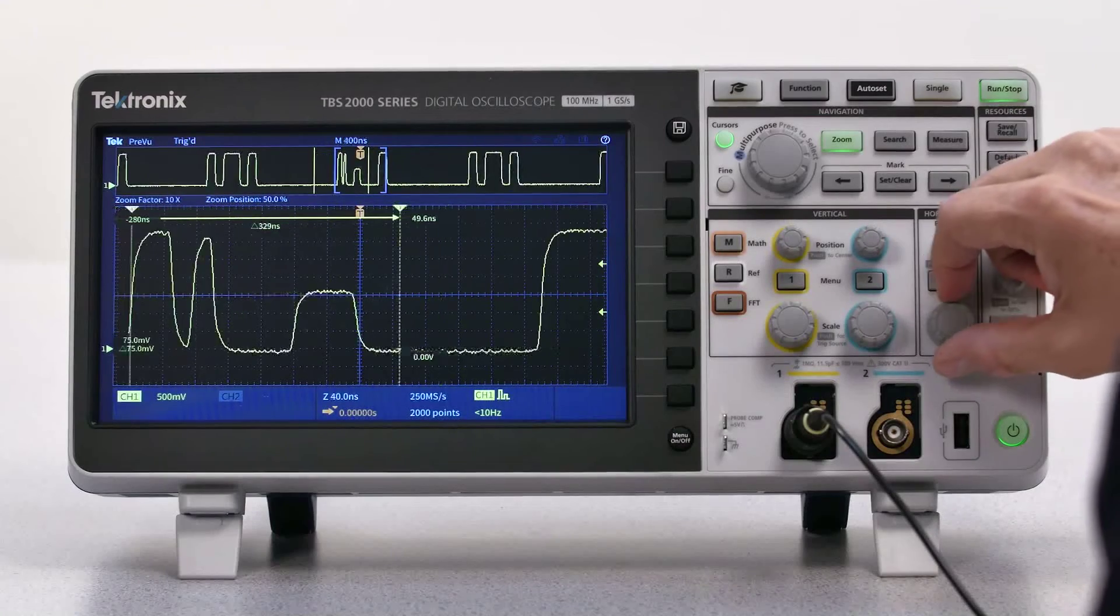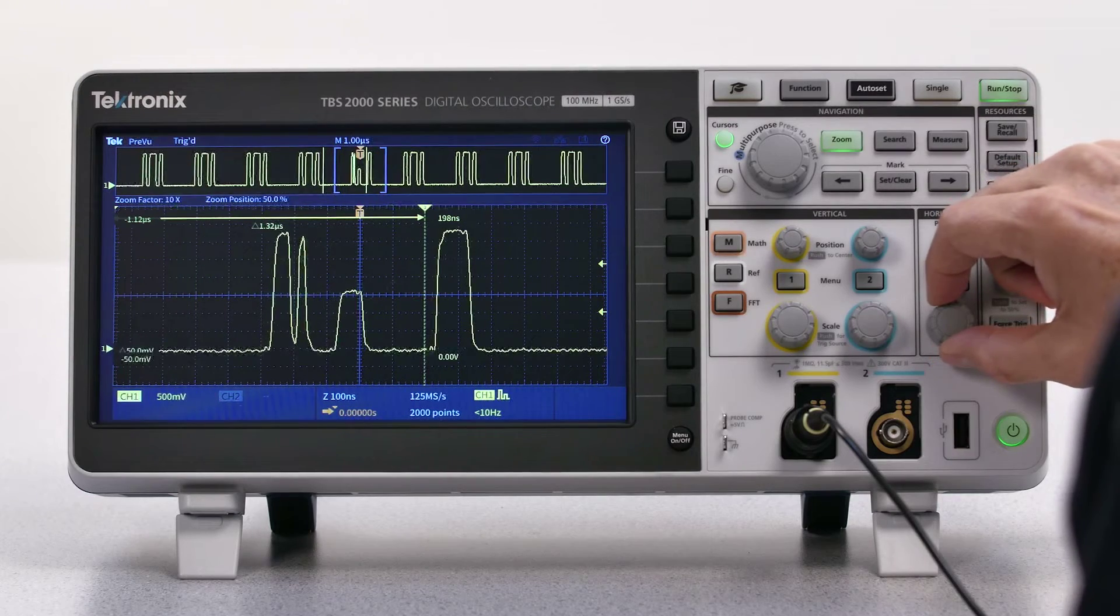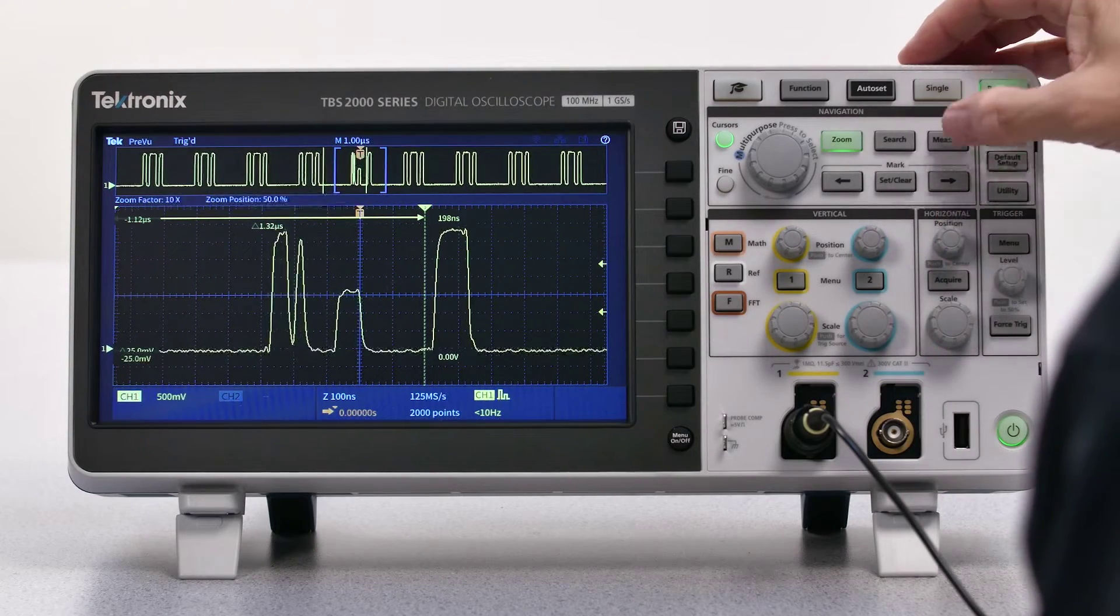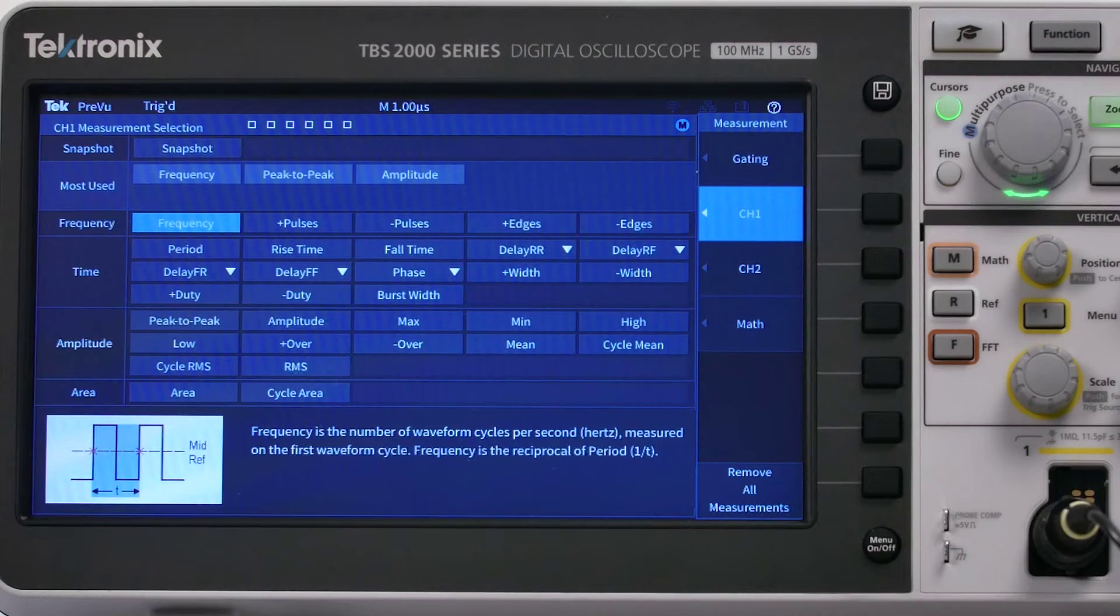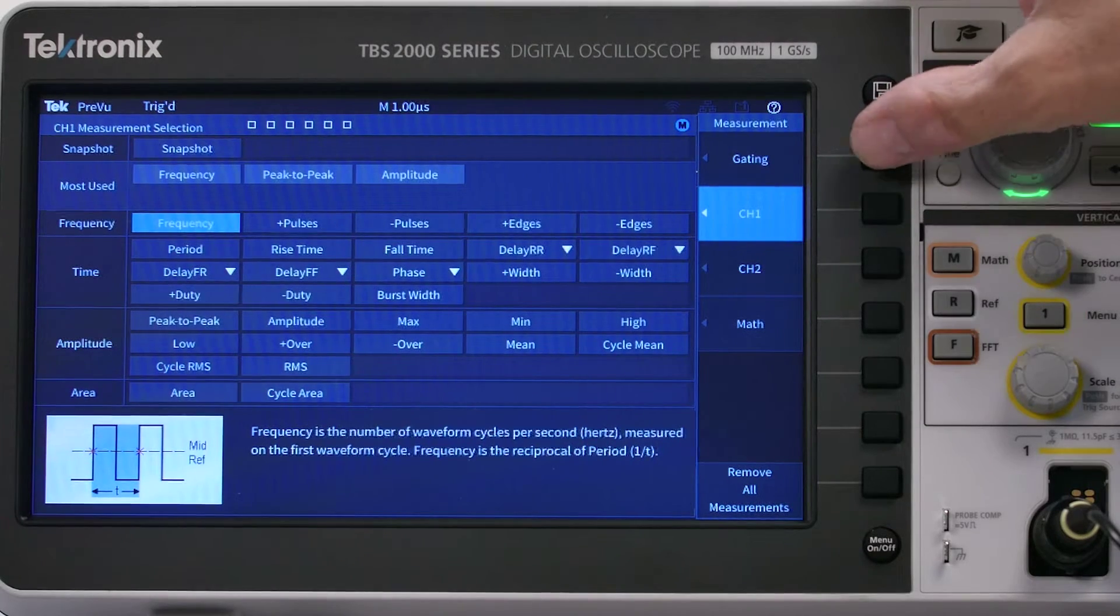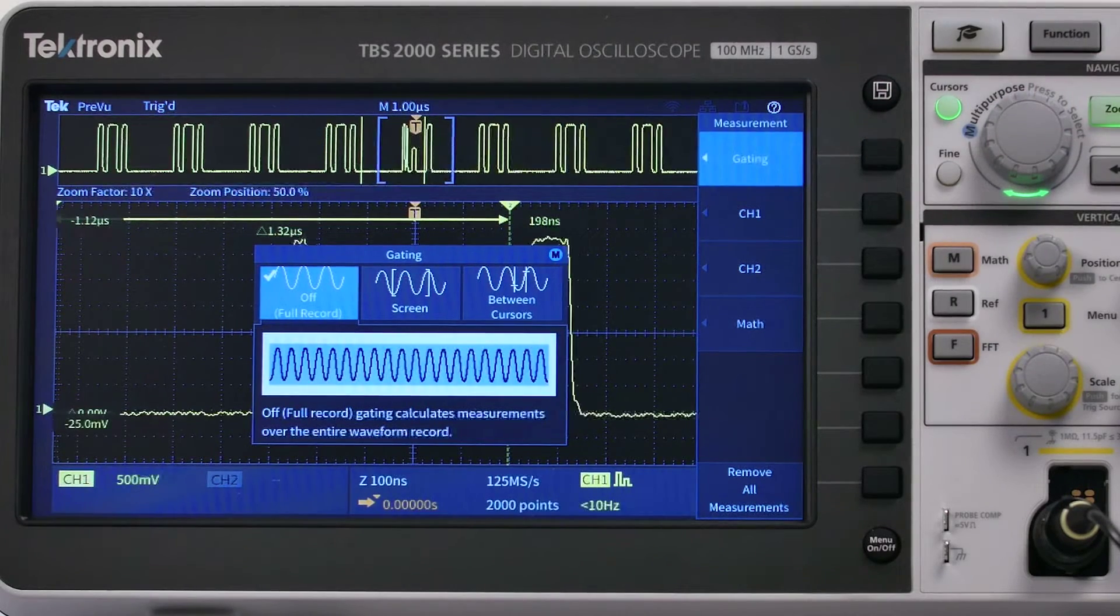Characterize your signals with any of the 32 automated measurements. Your most frequently used measurements are listed right at the top of the page. Gating lets you limit measurements to a specific part of your signal.